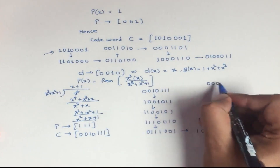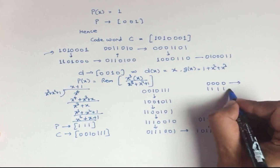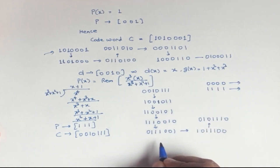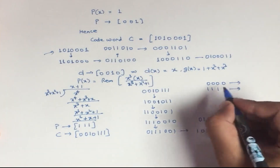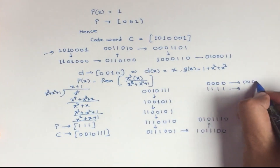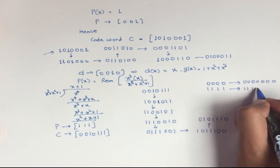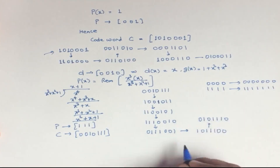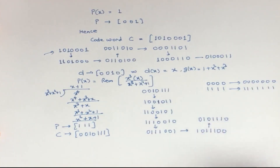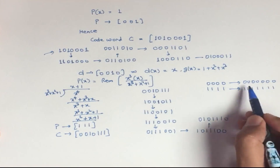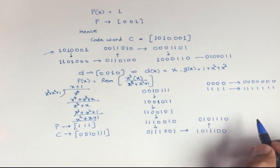We have 2 more data words not associated with any code word yet. We already know from Hamming code generation that one is associated with all-zeros and one with all-ones. These are not considered cyclic codes because a 1-bit shift does not give you another valid code word. Thank you all.